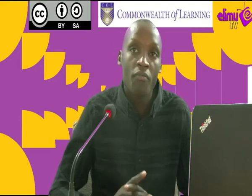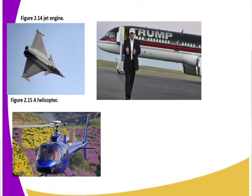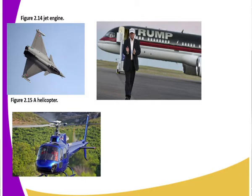Let's look at examples of air engines developed so far. We have the jet engine, which is mostly used by the military. Then we have the personal jet — the US president Trump has one of the most expensive jets in the world, which is a personal jet. In the third image we can see a helicopter. A helicopter carries three to five people, so it carries fewer people compared to a jet. A military jet is always used in warfare.